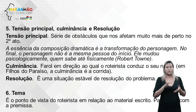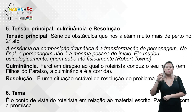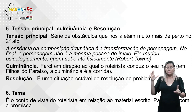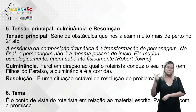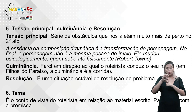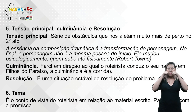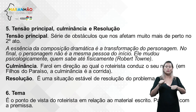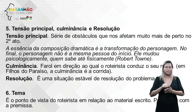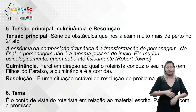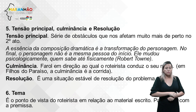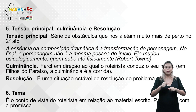Ferramenta 5: tensão principal, culminância e resolução. A tensão principal é uma série de obstáculos que nos afetam mais de perto no segundo ato. Segundo Robert Towner, a essência da composição dramática é a transformação do personagem — no final, ele não é a mesma pessoa do início, mudou psicologicamente, quem sabe até fisicamente. É muito importante que o espectador perceba essa transformação do personagem.